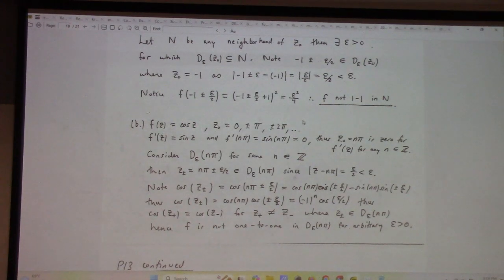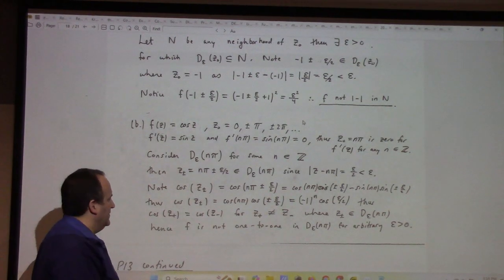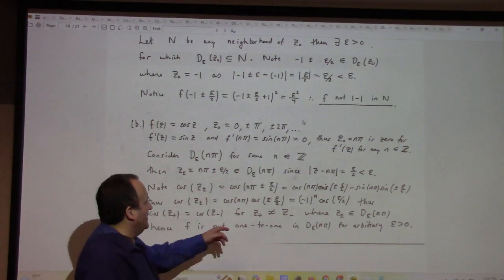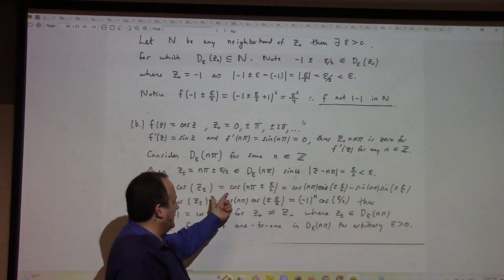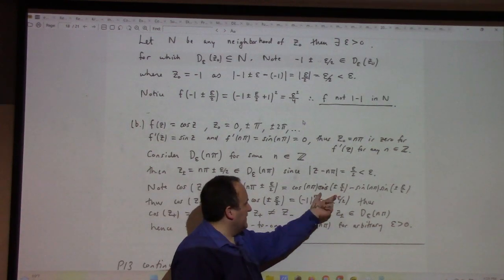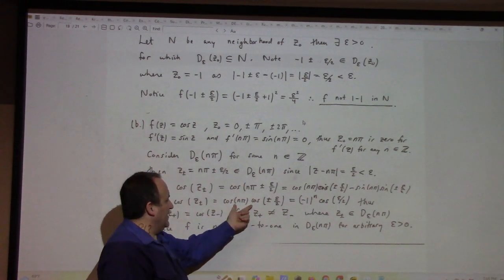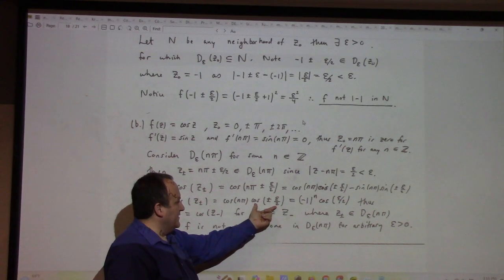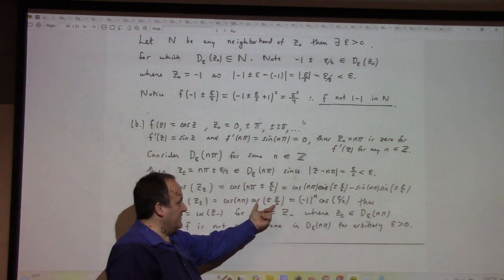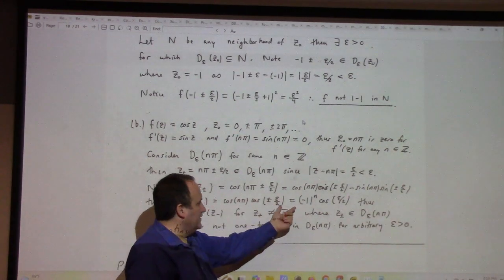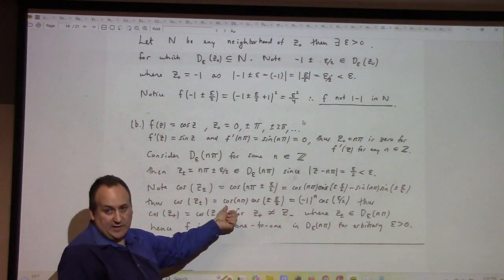I looked at n pi plus or minus epsilon over 2. When I calculate that, I get this, which ends up giving me cosine n pi e to the minus. But cosine's even, so it eats the minus, eats the plus or minus, and leaves us with minus 1 to the n. Cosine n pi is minus 1 to the n cosine epsilon over 2.